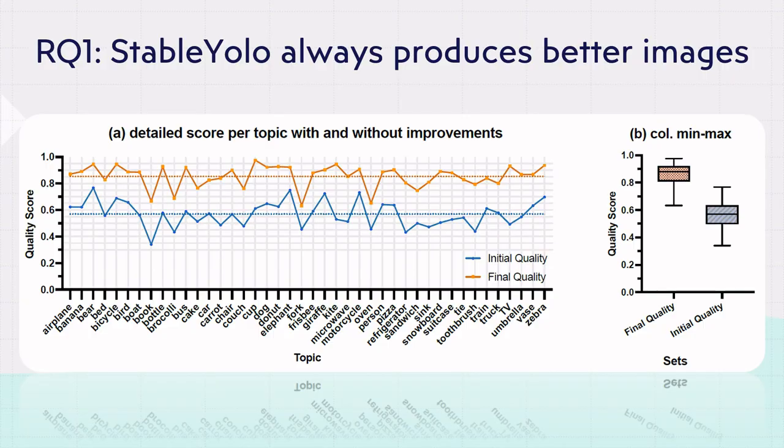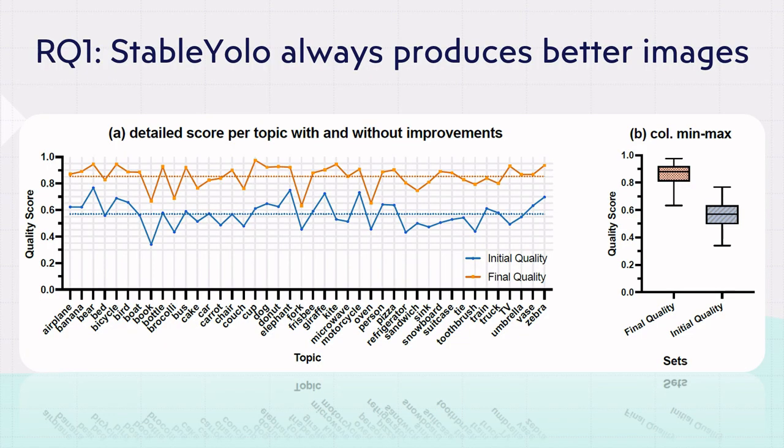Let's see the results. First question: are we actually improving? The answer is yes! We can see that we are always improving results across all of the different objects, and the improvement is statistically significant. The quality of the images after applying Stable YOLO is consistently higher than the quality before.